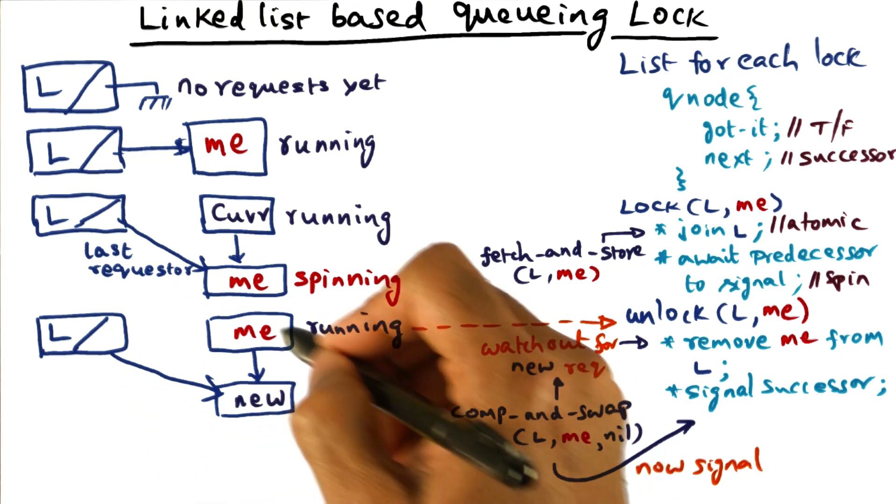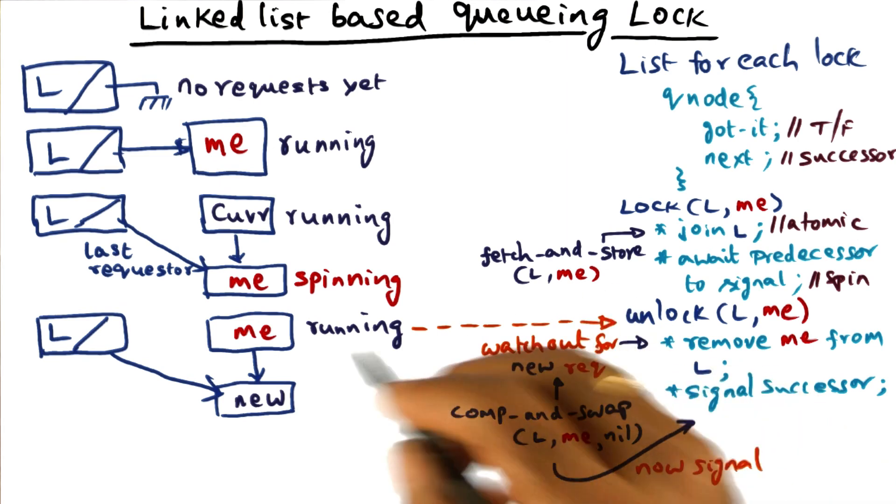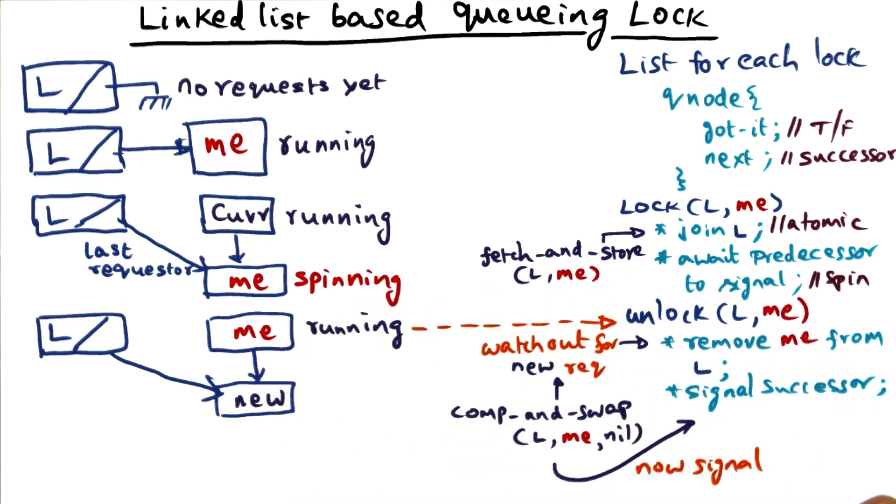So once this lock data structure has been fixed up nicely by this new requester, as far as I'm concerned, everything is good. The list is good, and therefore I can go ahead and signal the next guy that he's got the lock and be done with it.